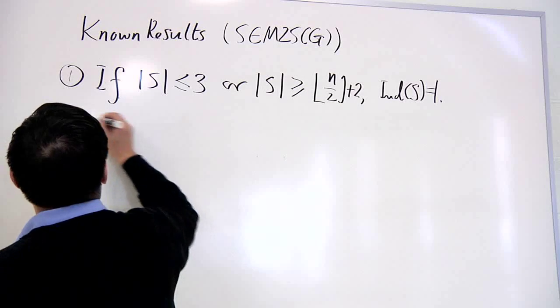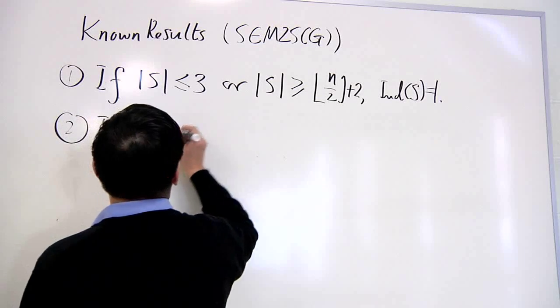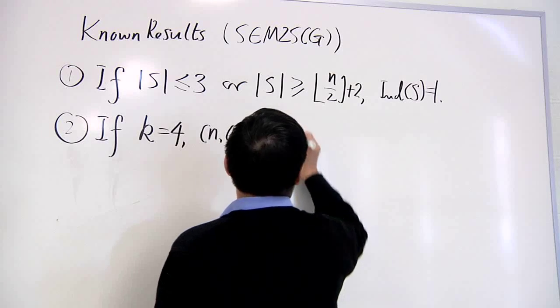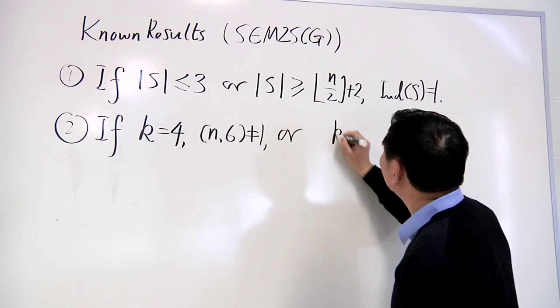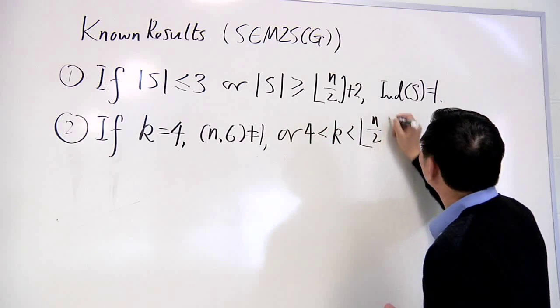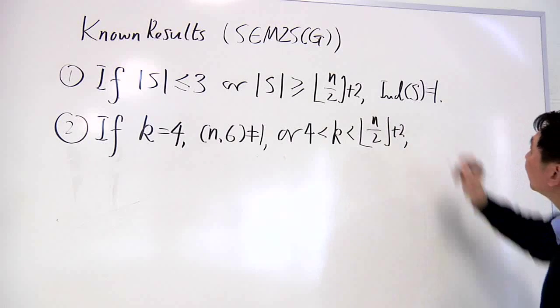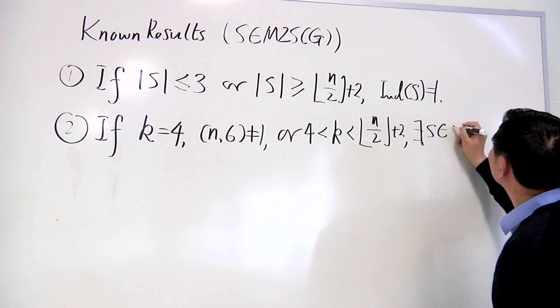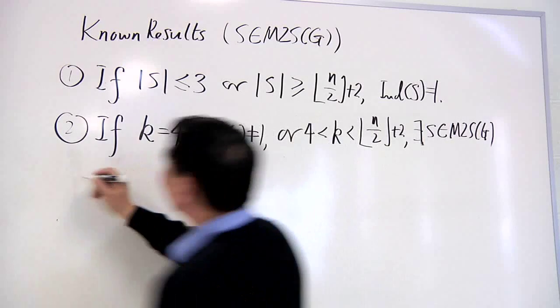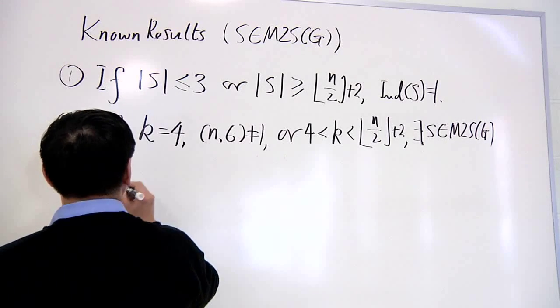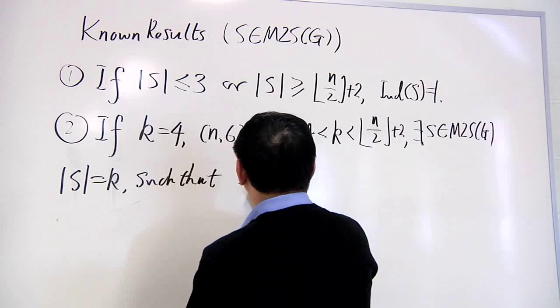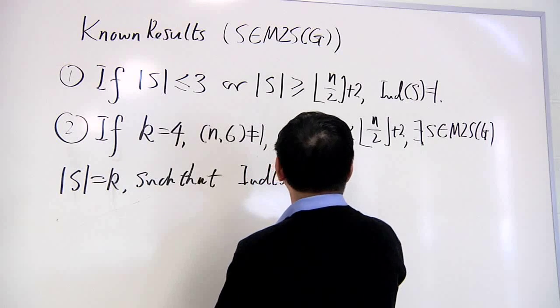If k equals 4 and n and 6 are not co-prime, or k is an integer between 4 and this floor, then there exists a minimal zero-sum sequence of length k such that the index is not equal to 1.